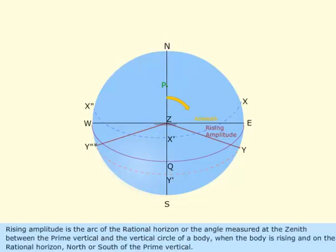Rising amplitude is the arc of the rational horizon, or the angle measured at the zenith between the prime vertical and the vertical circle of a body, when the body is rising and on the rational horizon, north or south of the prime vertical.